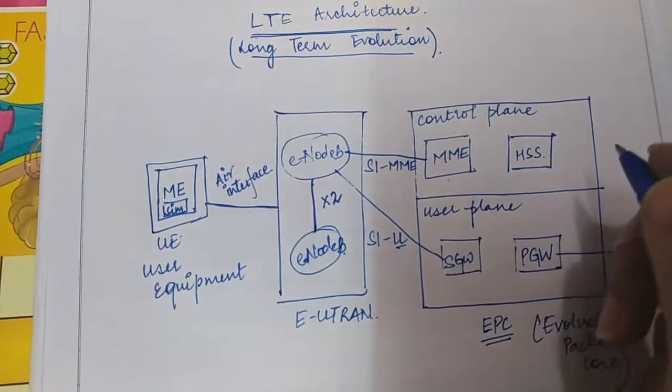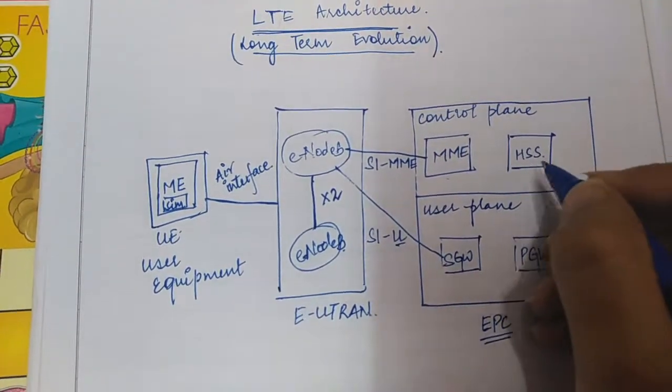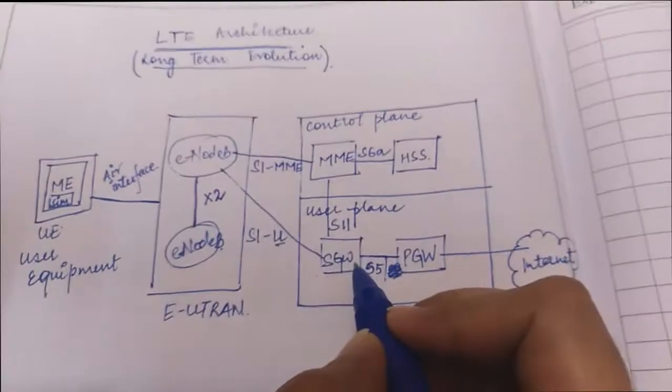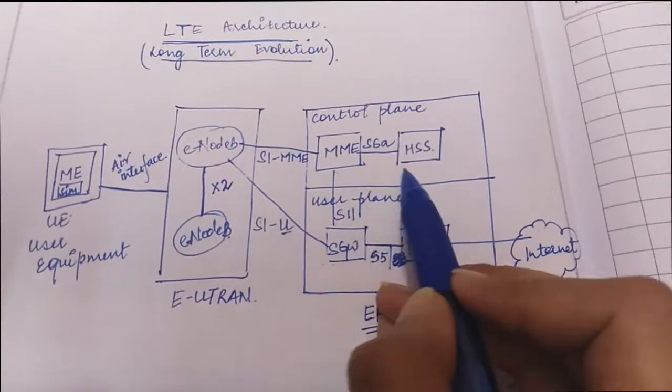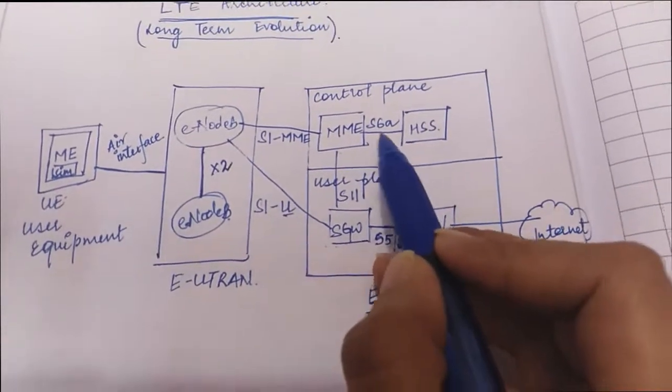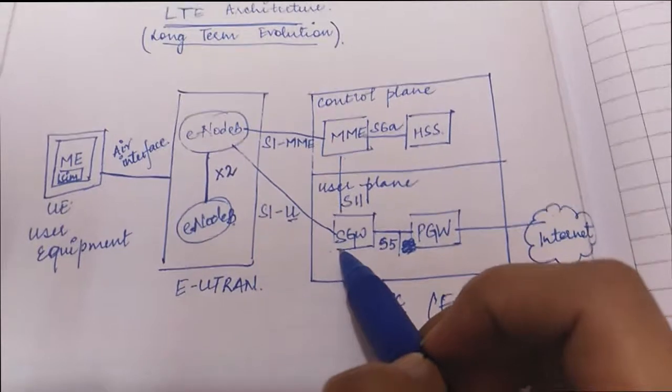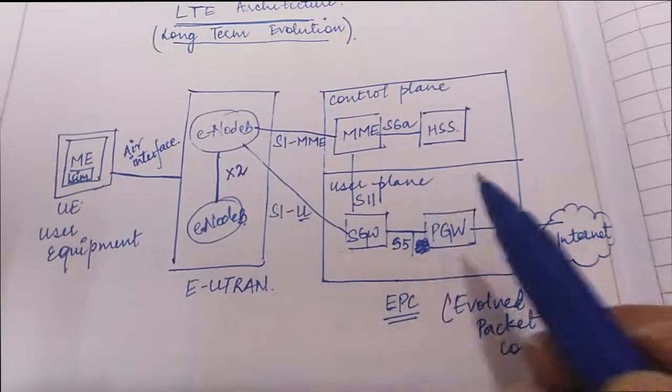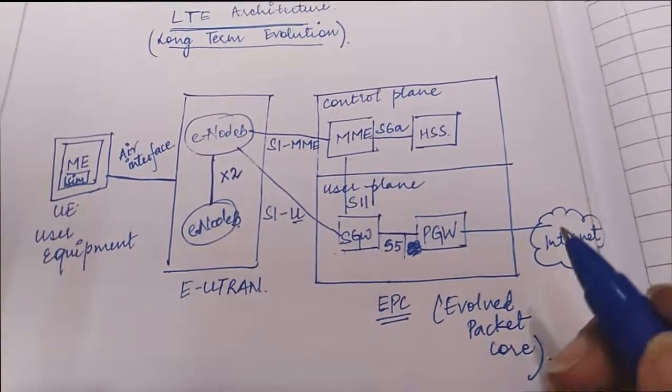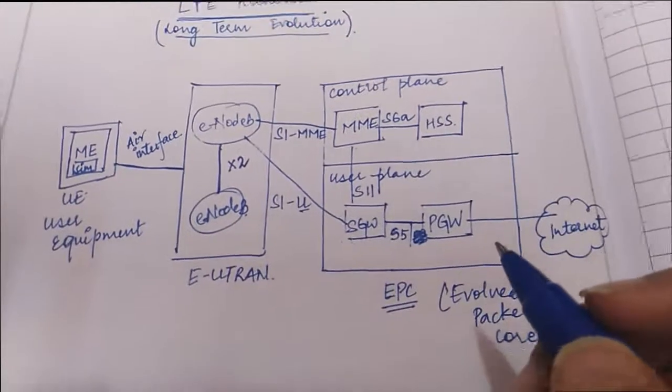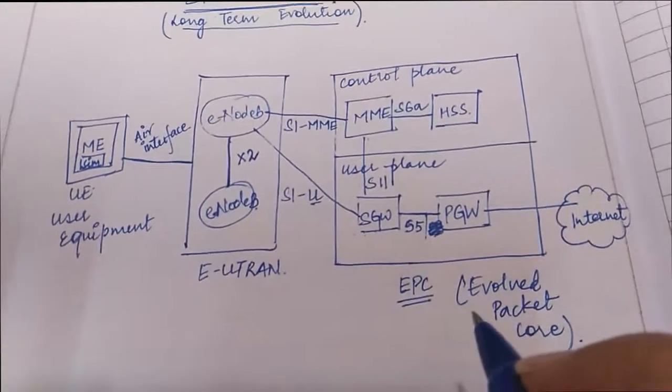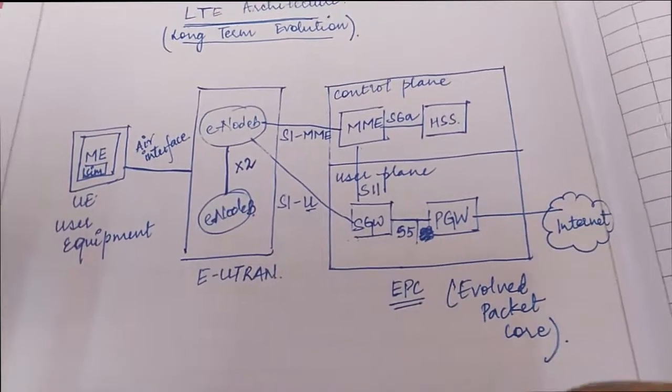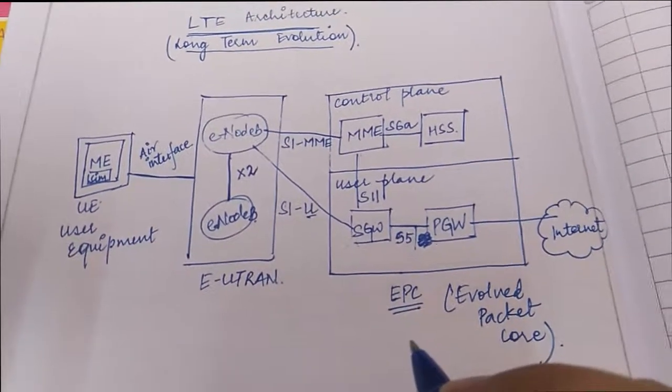And HSS is the home subscriber system. S gateway is connected to P gateway with S5 interface. MME to HSS with S6A interface. MME to S gateway with S11 interface. So one hint to remember these interfaces in LTE architecture: most of them start with the S as their initial alphabet.